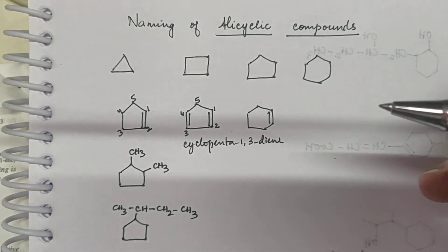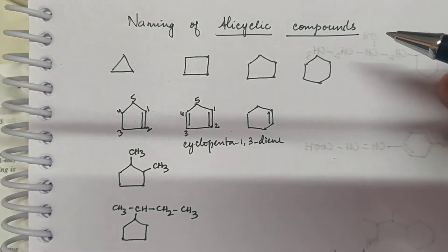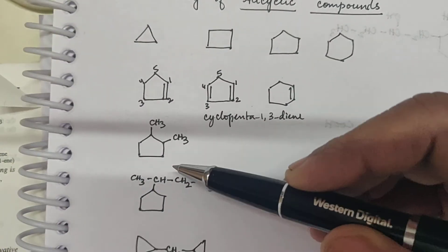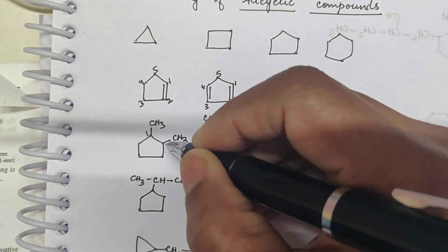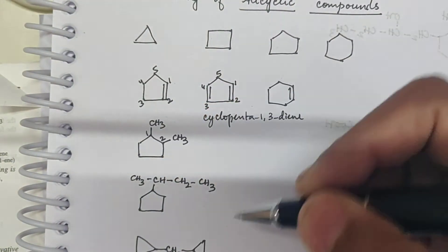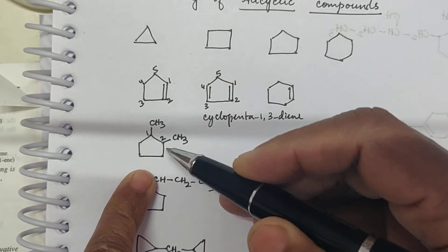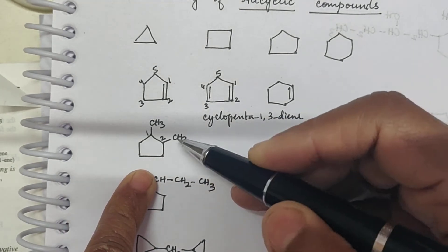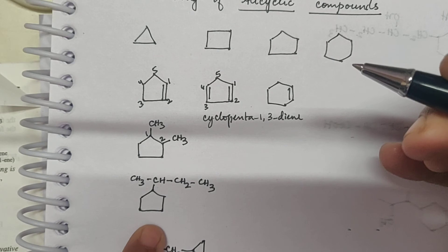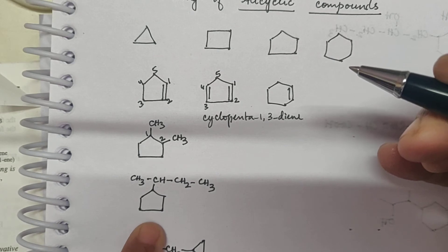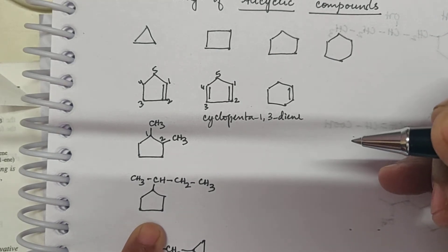This is called cyclohexane. Now what is this called? This is called 1,2-dimethylcyclopentane.